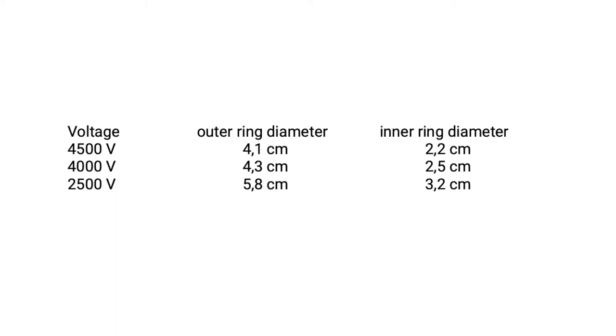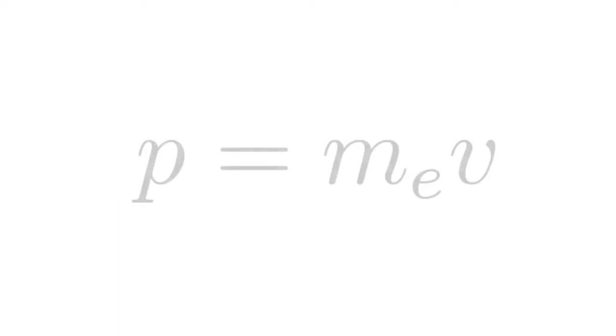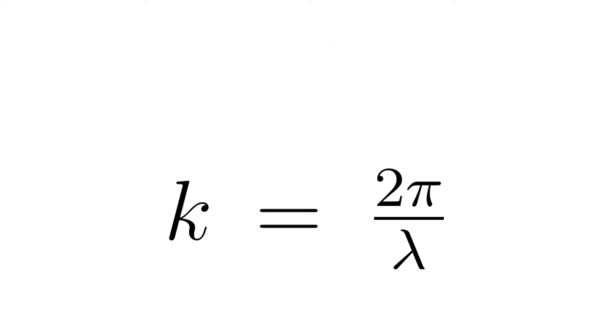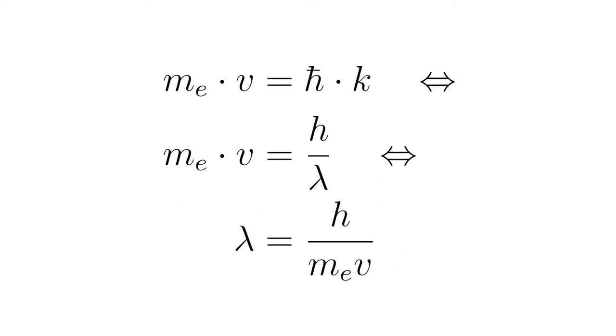For the momentum of an electron of mass m_e and velocity v applies p equals m_e times v. If we equate this with the wave particle relationship p equals h-bar times k and take into account the relation k equals 2π divided by lambda of wave number k and wavelength lambda, we get m_e times v equals h-bar times k, which is equivalent to m_e times v equals h divided by lambda, which is equivalent to lambda equals h divided by m_e times v. This is the de Broglie wavelength.